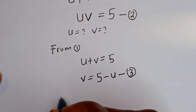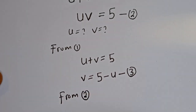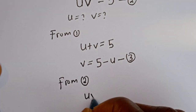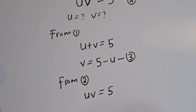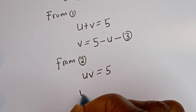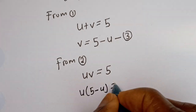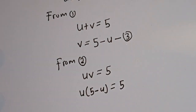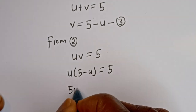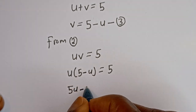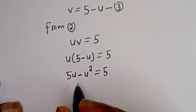Now from equation 2, let's substitute for v. That is, in uv equal to 5, anywhere you see v, you put 5 minus u there. This gives us u times (5 minus u) is equal to 5. Let's open the bracket: u times 5 is 5u, minus u times u is u squared, is equal to 5.